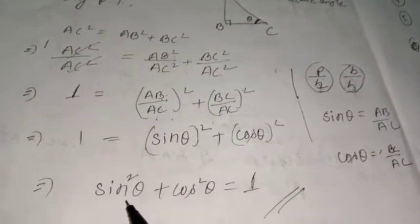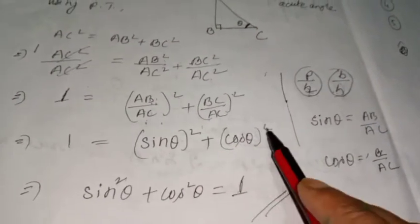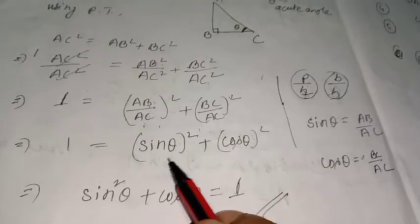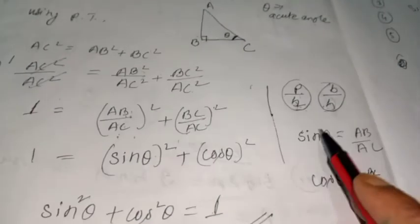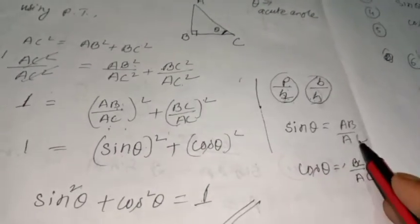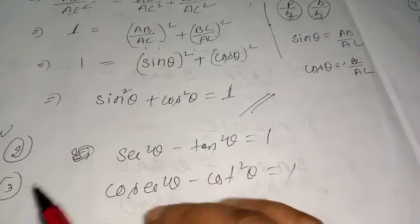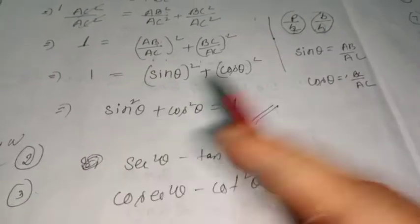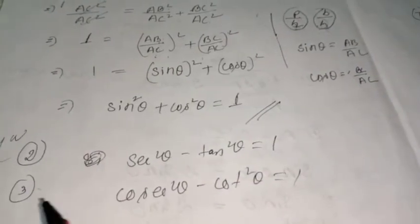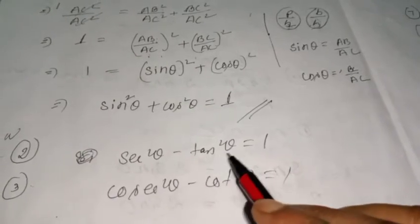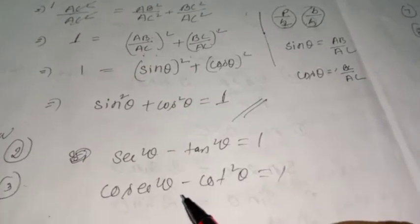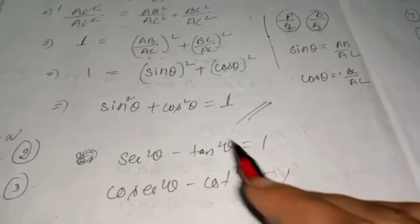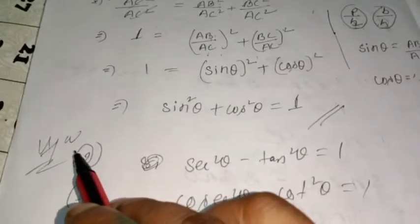According to angle C, AB/AC is perpendicular over hypotenuse, which equals sin θ, and BC/AC equals cos θ. So we get sin²θ + cos²θ = 1, because sin θ = AB/AC and cos θ = BC/AC. For identities number 2 and number 3, you can prove them yourself — this is your homework.